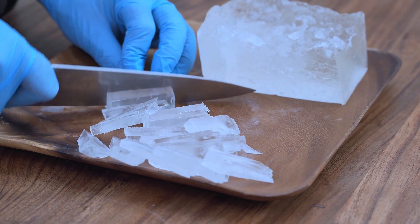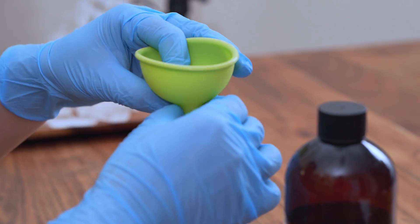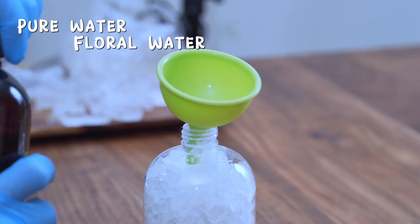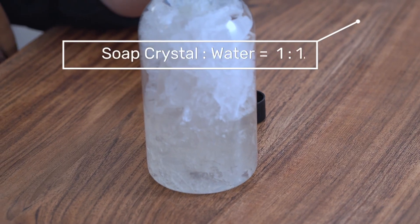Cut the Aqua Soap Crystal into small pieces and place them in a pumping bottle. Pour either pure water or floral water to soak the soap. Maintain a ratio of one part soap to 1.5 to 2 parts water for optimal dilution.